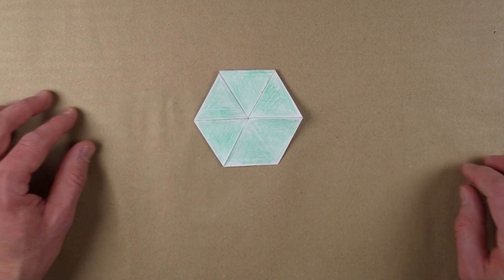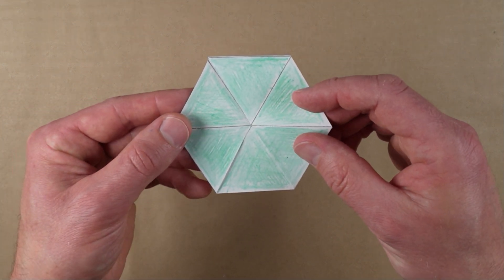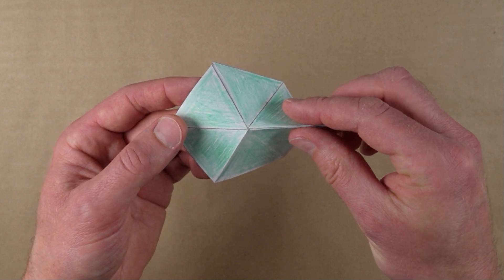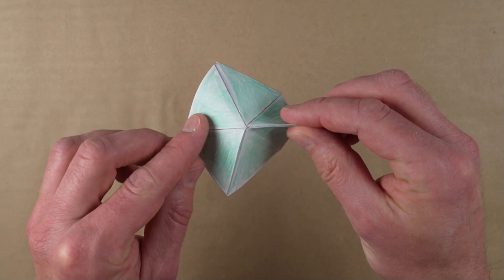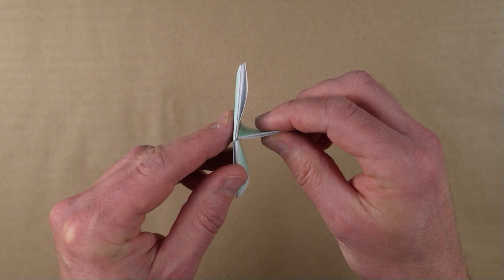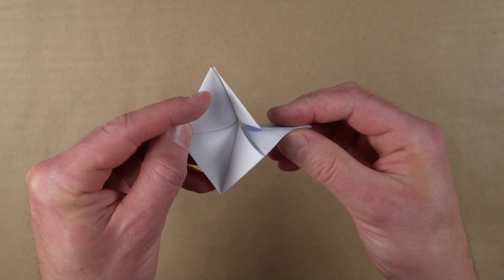To reveal the hidden face, pinch two adjacent triangles together, push the opposite vertex of the hexagon inwards, and pull apart the opening at the top.